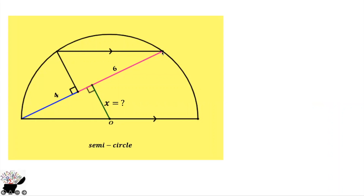First of all, I can draw a line from this end to this end, and this angle will be 90 degrees because this is the diameter, and this is the center of the semicircle.